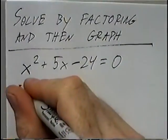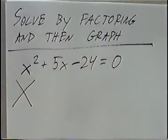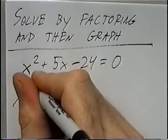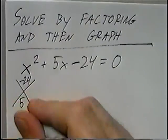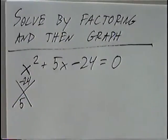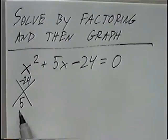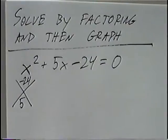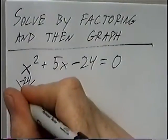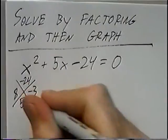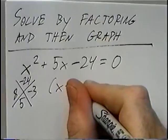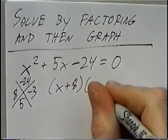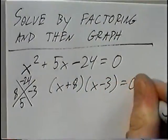Factoring from here, we can use the diamond method. Negative 24 would be the top number we're multiplying to, and 5 would be the bottom number we're adding to. Two numbers that multiply to get negative 24 and add to get 5 are 8 and negative 3. Writing our answers in factored form, this would be (x plus 8) times (x minus 3) equals 0.